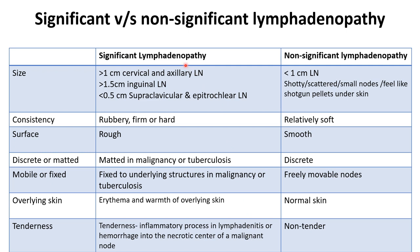In non-significant lymphadenopathy — for example, if the patient is in the 4 to 8 year age group, which is the normal age for lymphoid growth — or sometimes due to lice infestation or immune response after vaccination, the patient can develop non-significant lymphadenopathy. In these cases we are not supposed to go for further investigations. We have to do proper counseling because it resolves by 3 to 6 months.